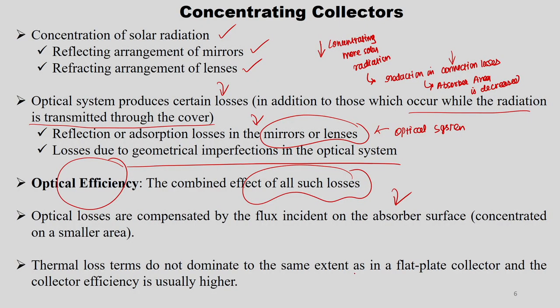If you need higher temperature and higher concentration ratio for thermal applications, you can go for concentrating collectors. If your application requires low temperature, you can use non-concentrating collectors — ETC or FPC. These optical losses are compensated by the flux incident on the absorber surface, which is concentrated on a smaller area, so thermal loss terms do not dominate to the same extent as in FPC. The collector efficiency is usually higher in concentrating collectors.